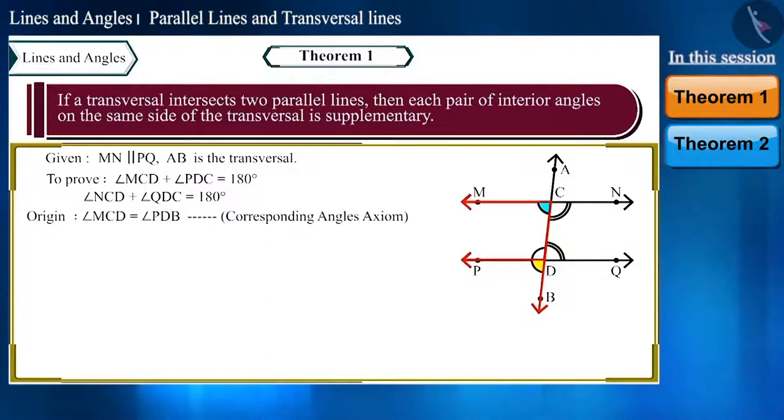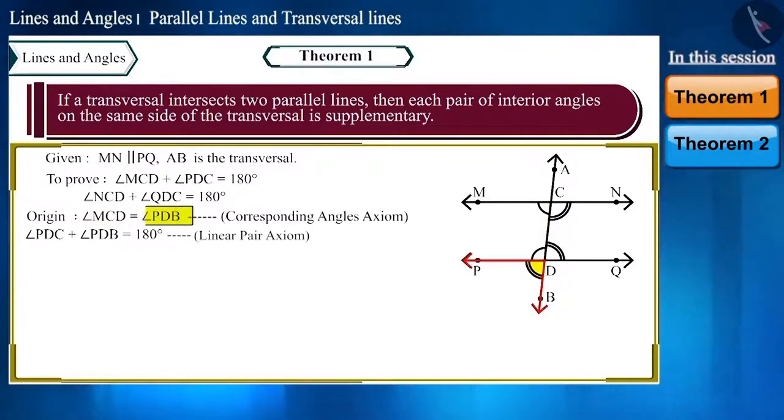Angle PDC and angle PDB form a linear pair, so their sum will be 180. Look at these carefully. Here angle PDB is equal to angle MCD, so instead of angle PDB we can write angle MCD here.